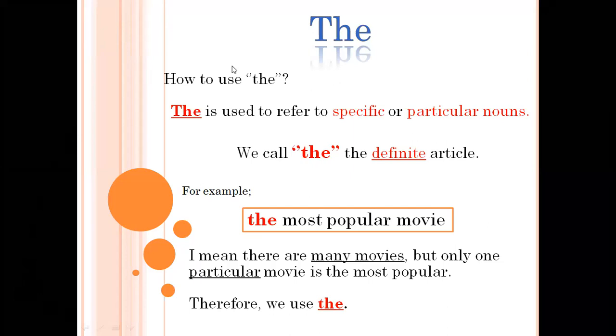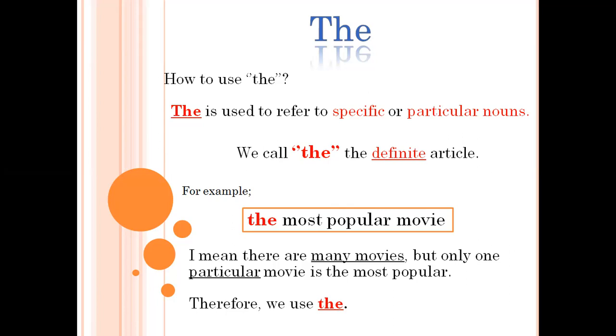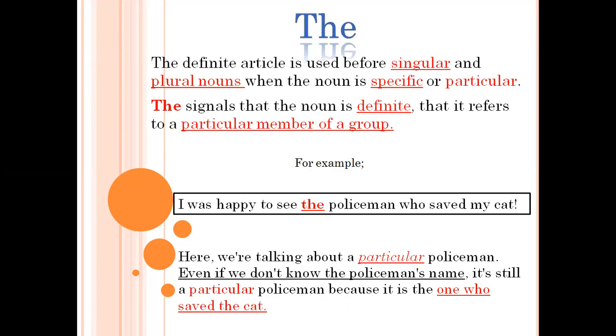How to use the. The is used to refer to specific or particular noun. We call the the definite article. For example, the most popular movie. I mean there are many movies but only one particular movie is the most popular. Therefore, we use the. Definite article is used for singular and plural nouns. Means we can use the with singular or plural. When noun is specific or particular. The signals that the noun is definite that it refers to a particular member of a group. I was happy to see the policeman who saved my cat. Here we are talking about particular policeman. Even if you don't know the policeman's name, it's still a particular policeman because it is the one who saved the cat.